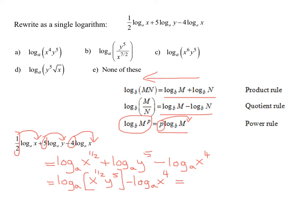So this is going to give me log to the base a of x to the 1 half times y to the 5th, all divided by my x to the 4th. Since this log here, the log to base a of x to the 4th was negative, that means it goes in the denominator.